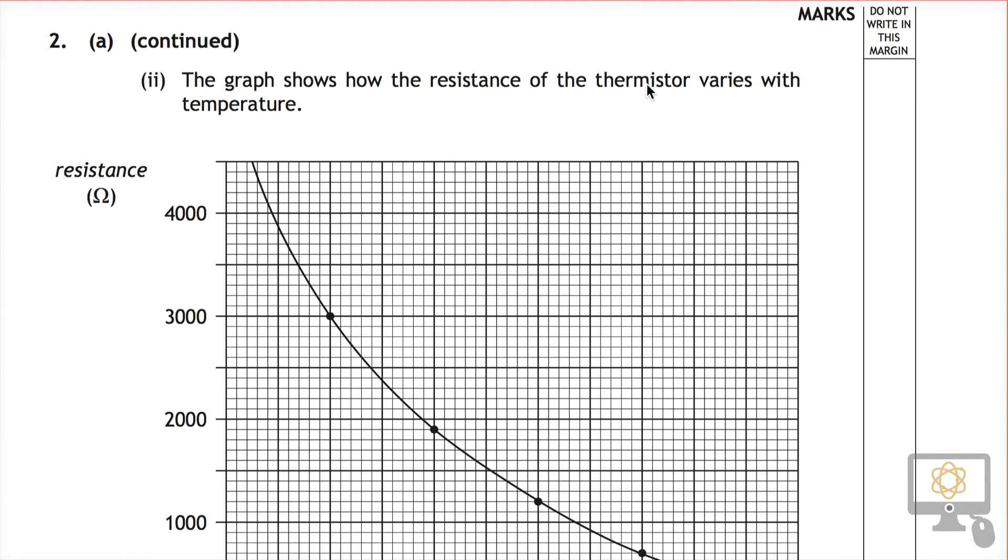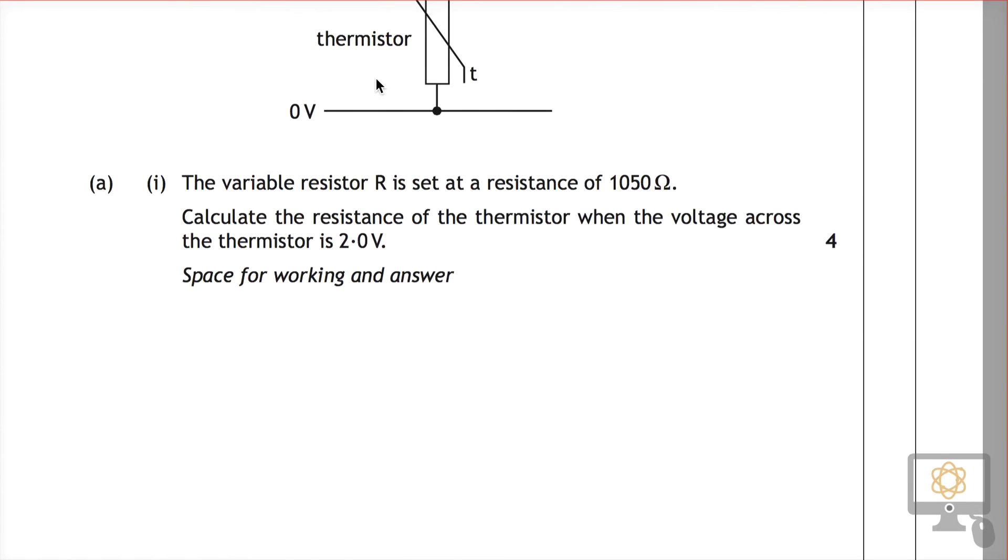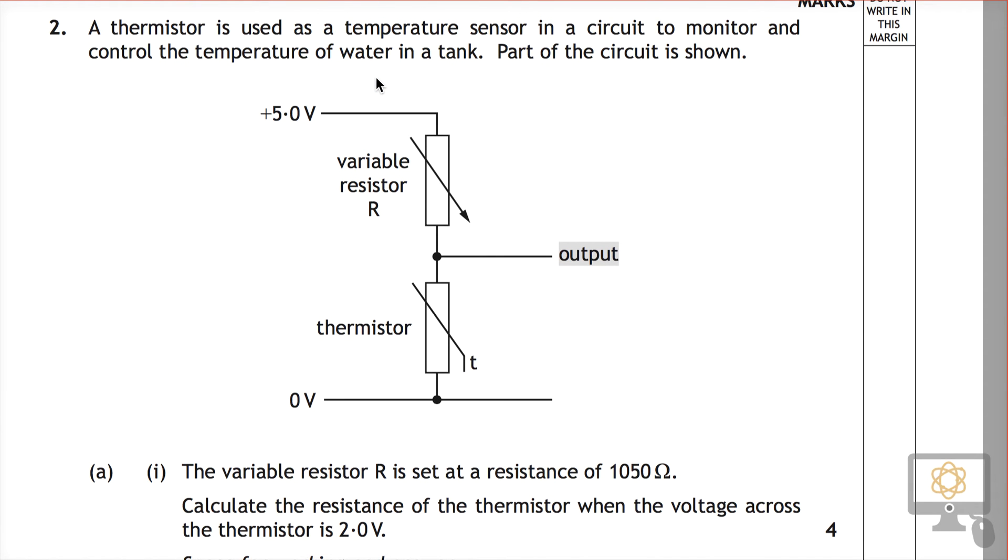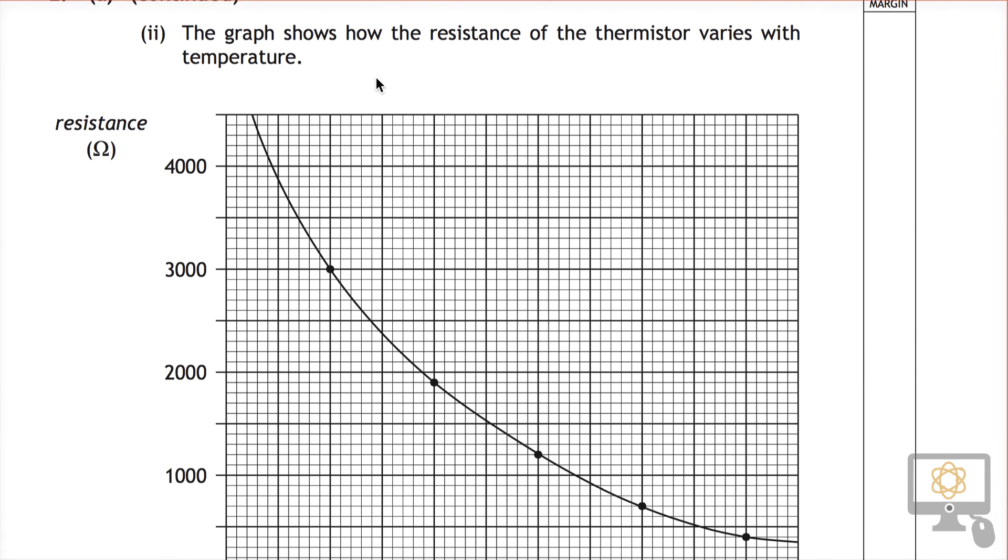We'll be looking at question 2a part 2 from the 2014 National 5 physics paper. This question relates to the graph, sorry, doesn't relate to the graph, relates to a circuit at the start of question 2. And it shows a graph.